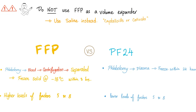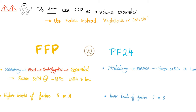Let's compare fresh frozen plasma and plasma frozen 24. Fresh frozen plasma: phlebotomy — you get a blood sample from the patient's vein, centrifugation separates the plasma, and then you freeze it solid at negative 18 Celsius (about zero degrees Fahrenheit) within eight hours — that's why it's fresh and also frozen. It contains higher levels of factors 5 and 8 than its counterpart. Plasma frozen at 24 (PF24): phlebotomy, plasma frozen within 24 hours — that's why we call it PF24 — and it has lower levels of factors 5 and 8.